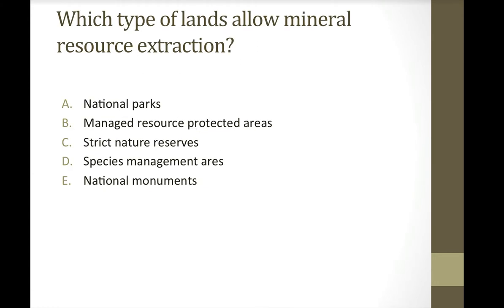Quick question: which type of land allows mineral resource extraction? Is it A, national parks; B, managed resource protected areas; C, strict nature reserves; D, species management areas; or E, national monuments? The correct answer is managed resource protected areas — these are the multiple use lands where you can extract resources, harvest timber, hunt, and also do recreation.